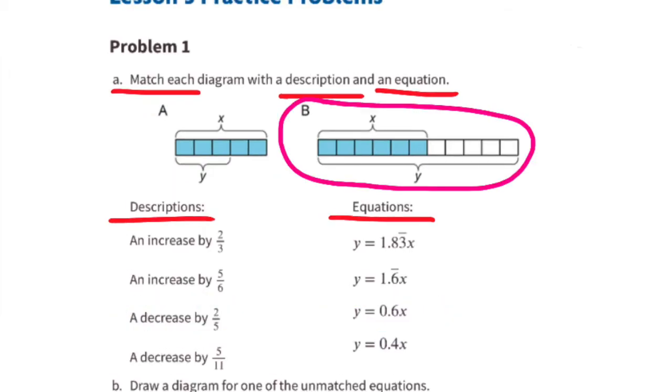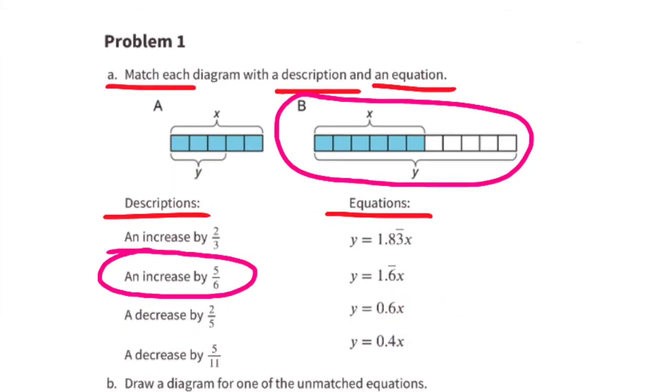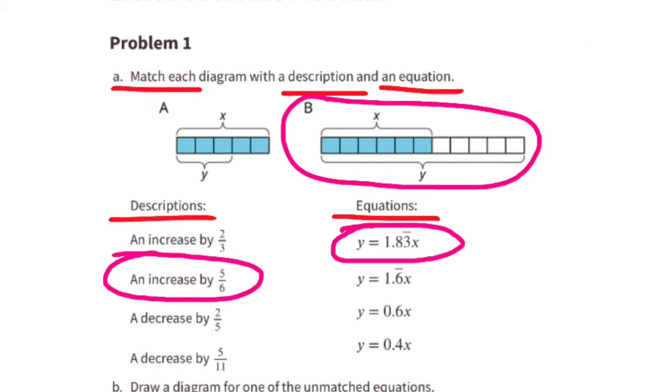Diagram B shows an increase by five-sixths, and that's because the length of x was six-sixths or one whole. To get the length of y, we added five more sixths.